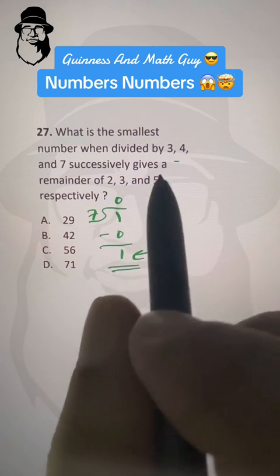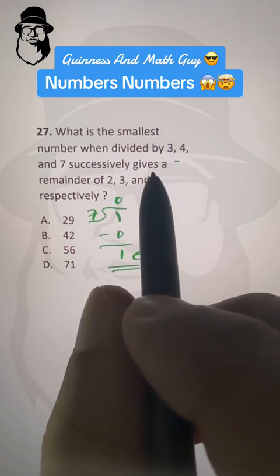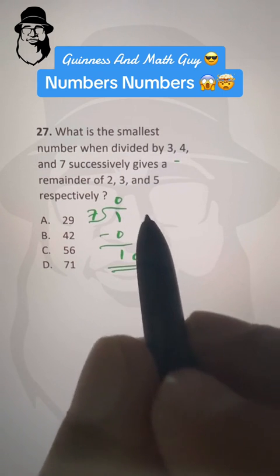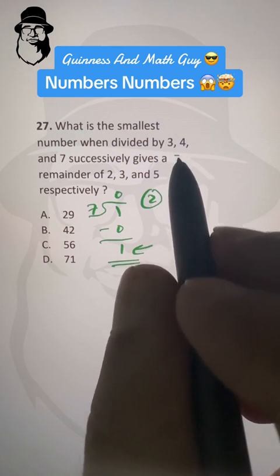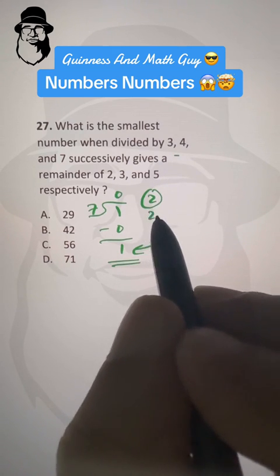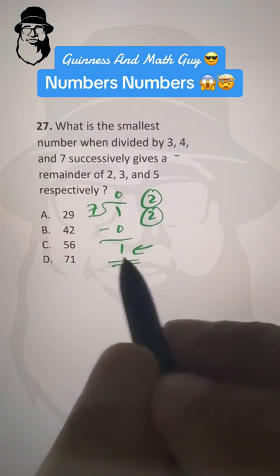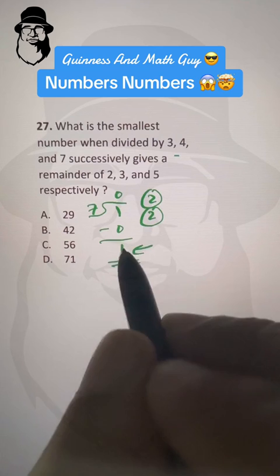So 20 divided by 3 gave us 6 remainder 2. So we have remainder 2, and then 6 divided by 4 also gave us remainder of 2. And then in the end, we have remainder of 1 here.